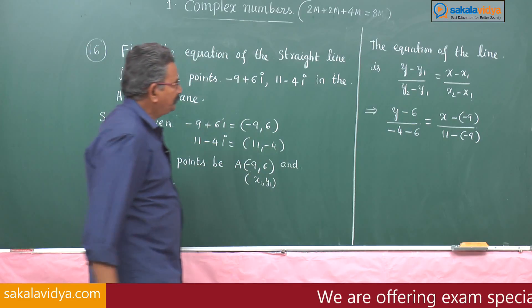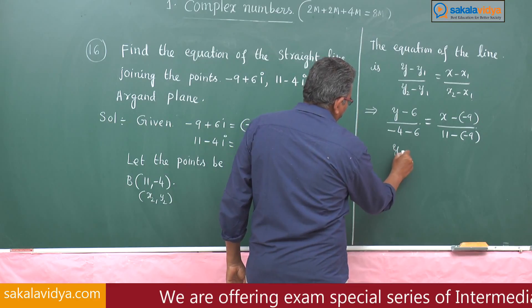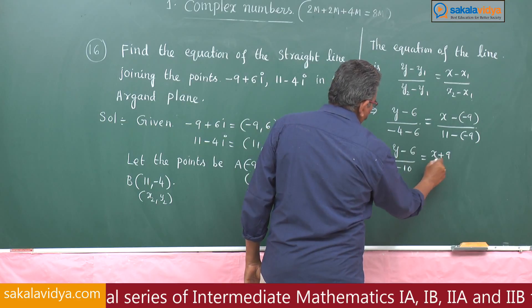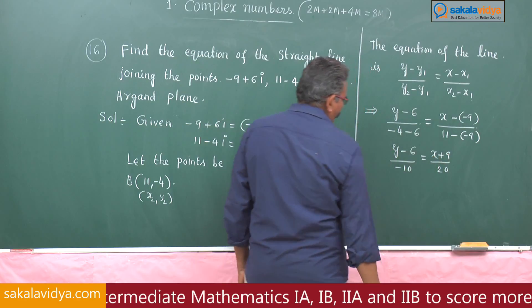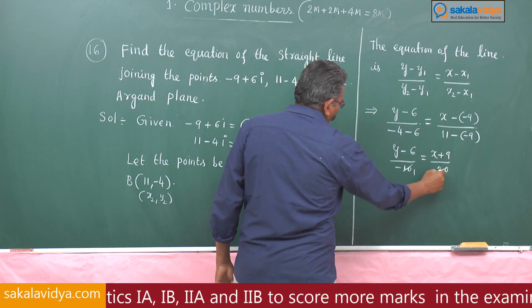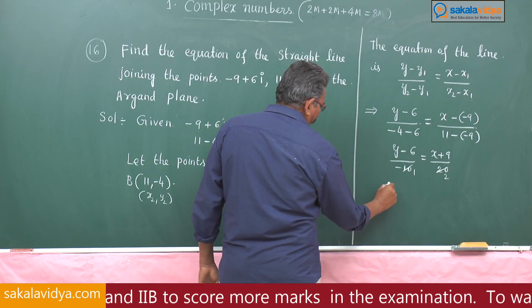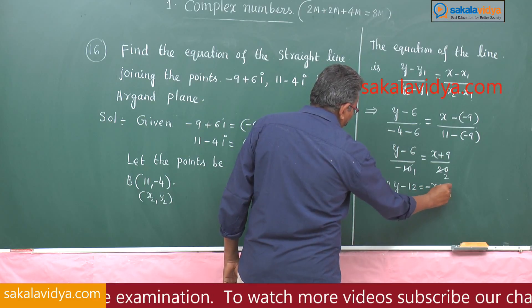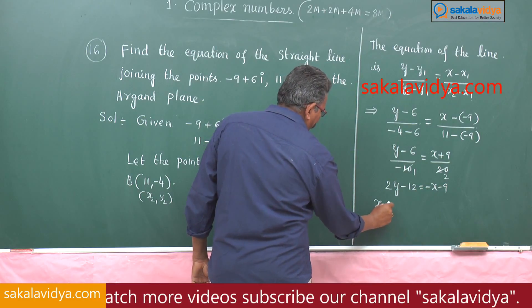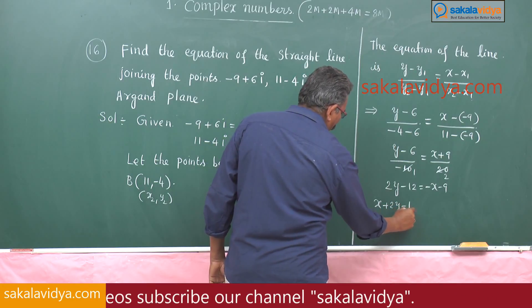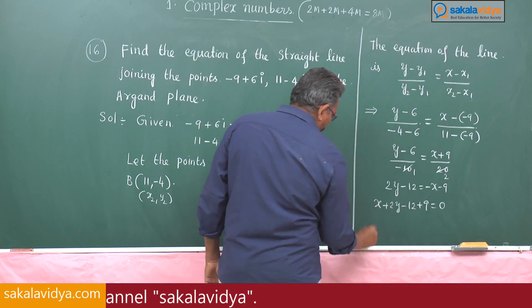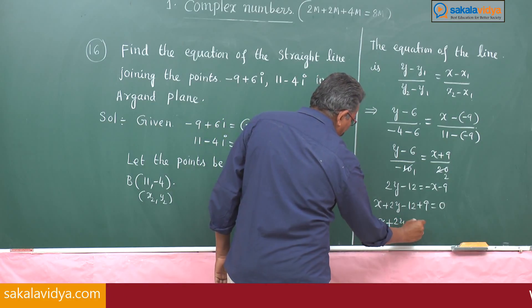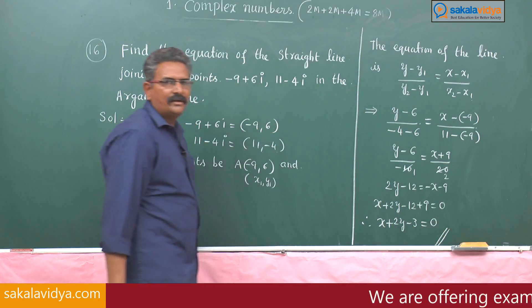Simplifying, the required equation is x + 2y − 3 = 0. This is the answer.